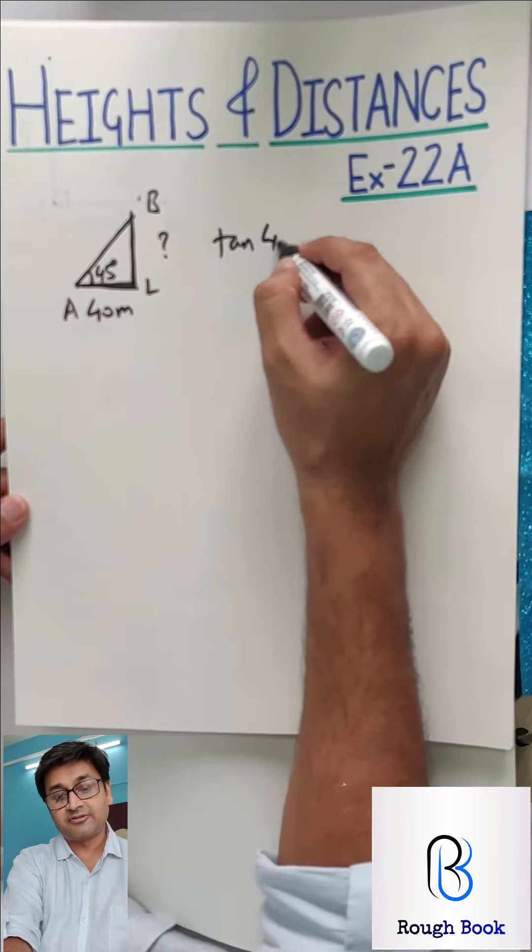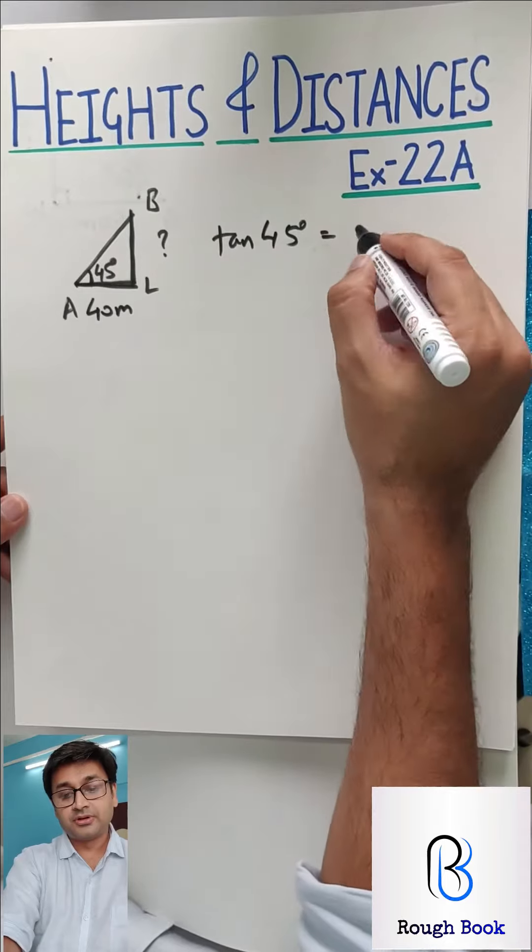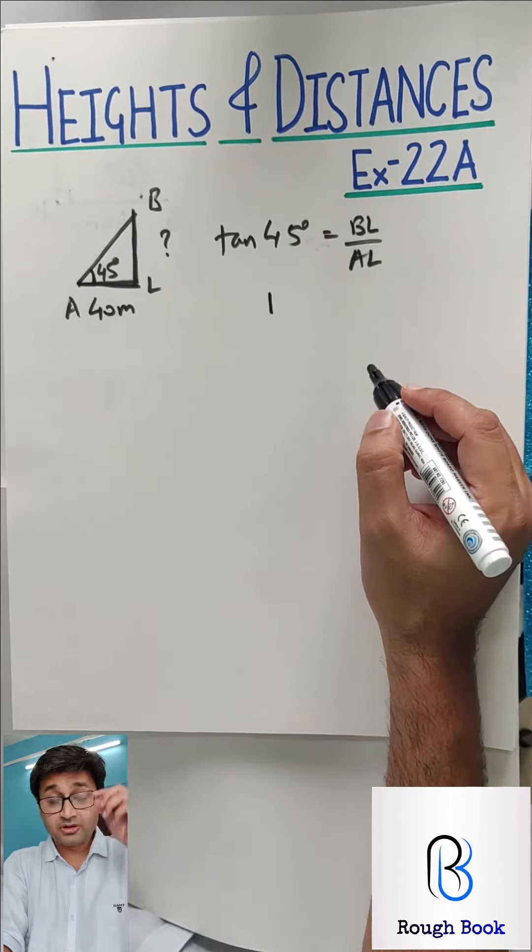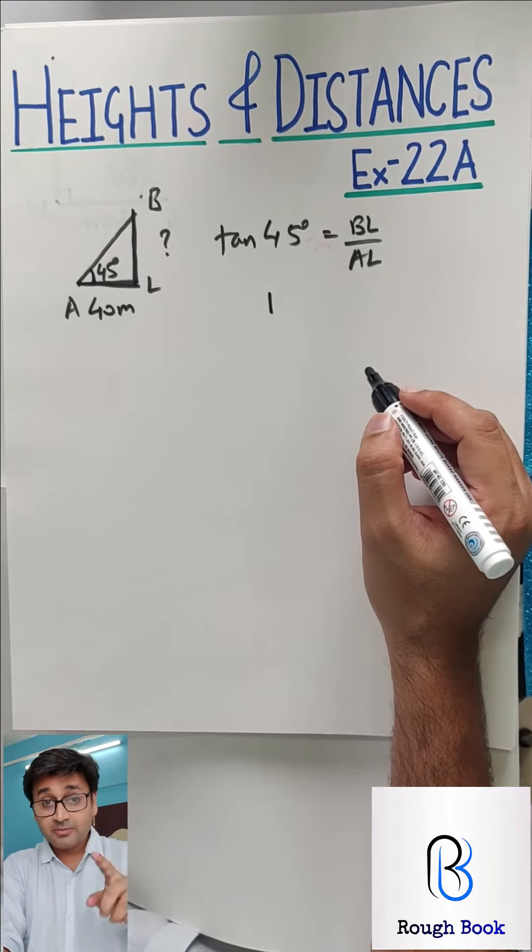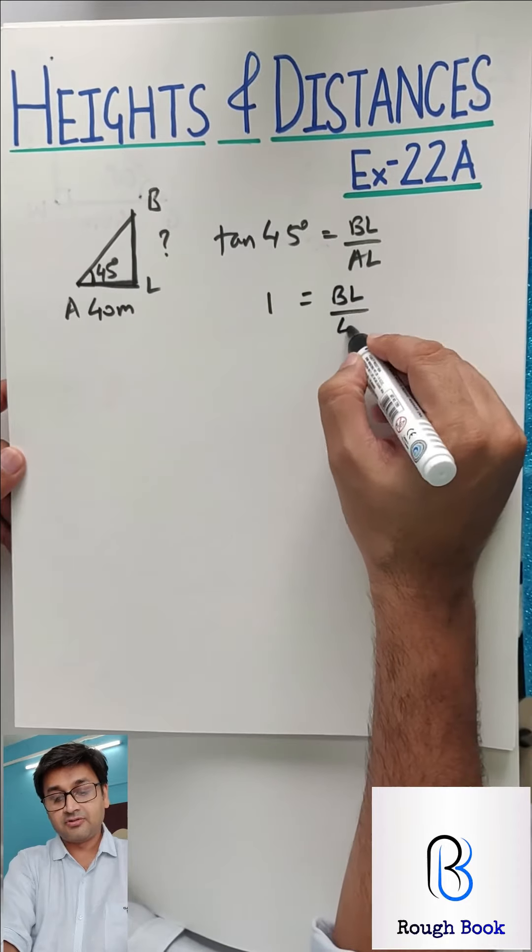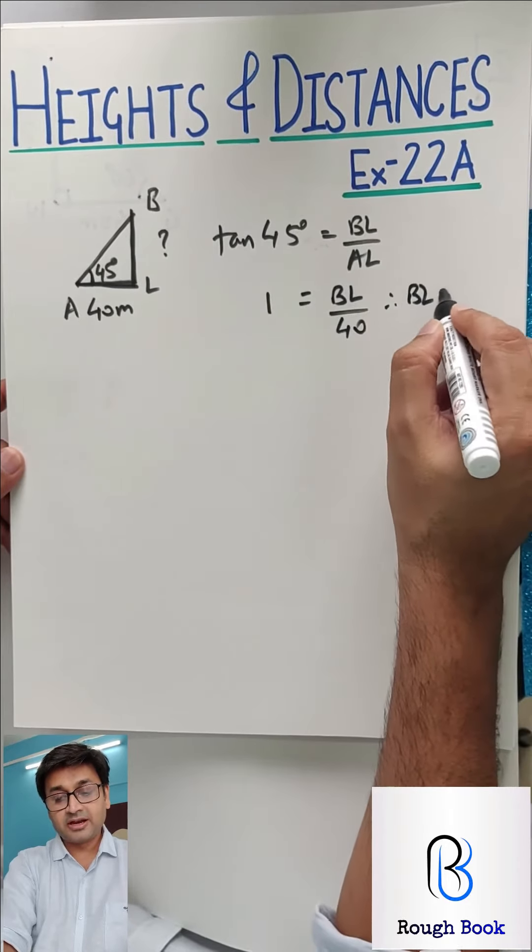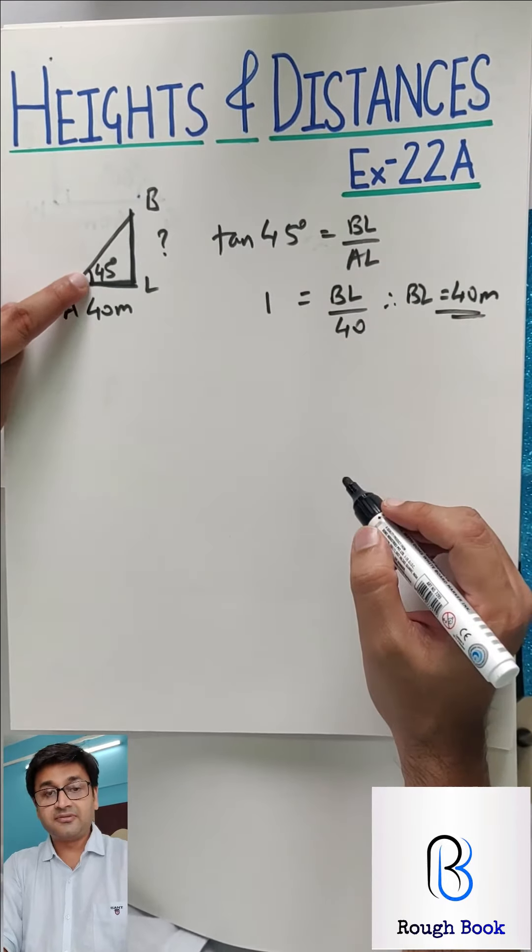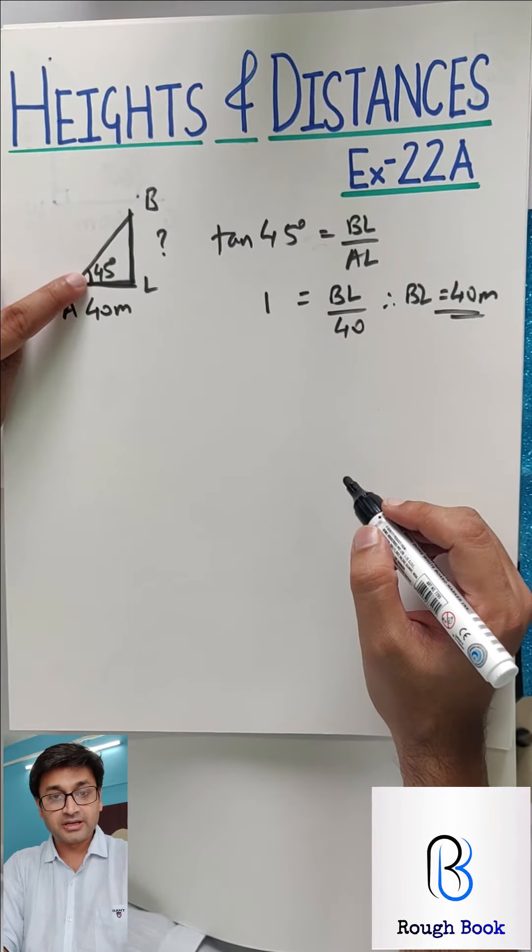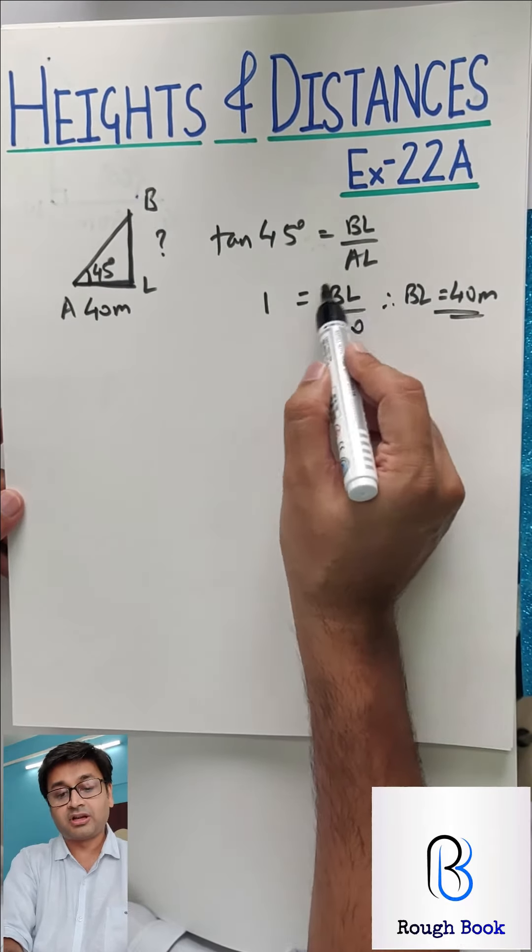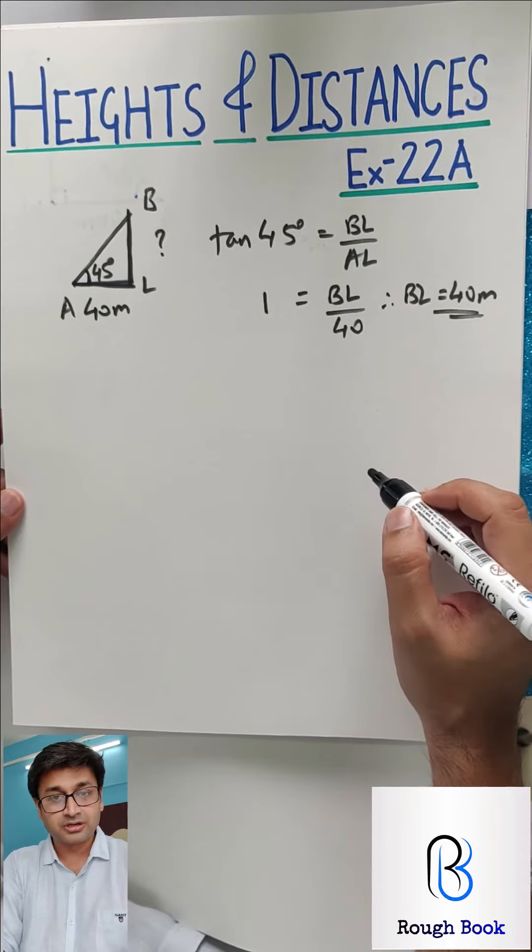Then we use all the Trigonometric ratios. For example, if I say tan 45, that is opposite BL upon adjacent AL. Tan 45, we know the value from the table is 1. BL upon AL which is 40. Therefore, the height of the building also becomes 40 meters. So this angle can vary anything from 0 to 90. You can take that value from the table, substitute, multiply it with 40 and you will get the height of the building straight away.